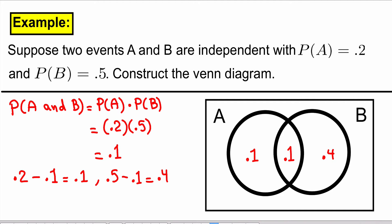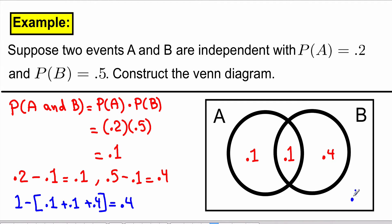Now to find the probability of not A or B — in other words, outside of circles A or B — we go 1, which is the total probability for all, minus the numbers that are inside of the circles, which would be equal to 0.4. So this will make the sum of all probabilities inside of the Venn diagram equal to 1.